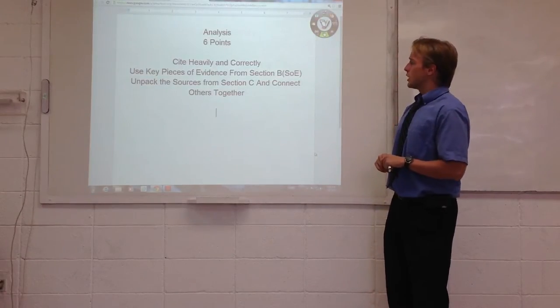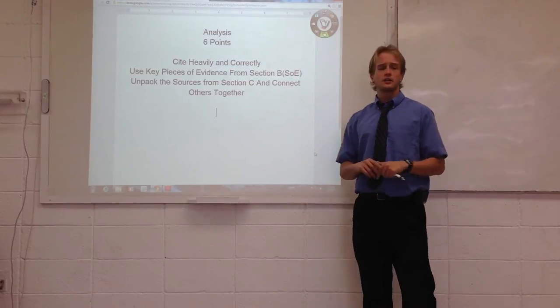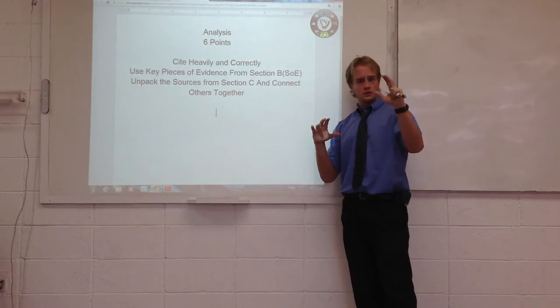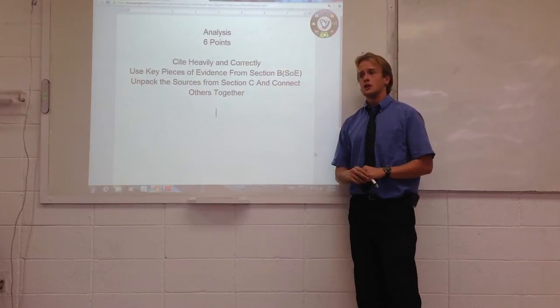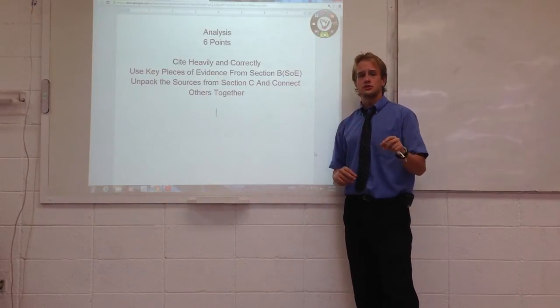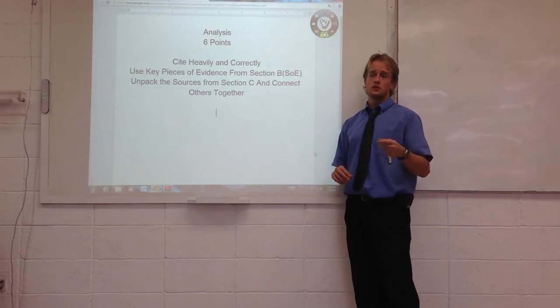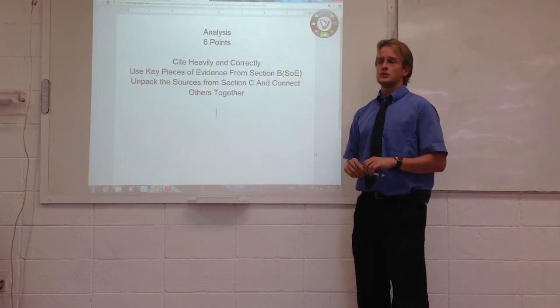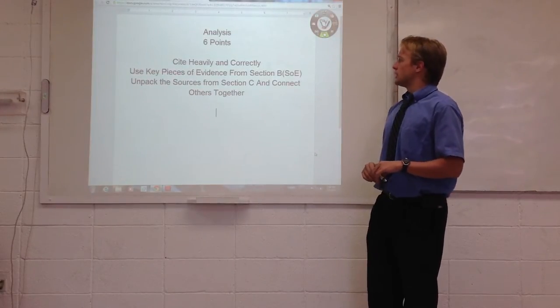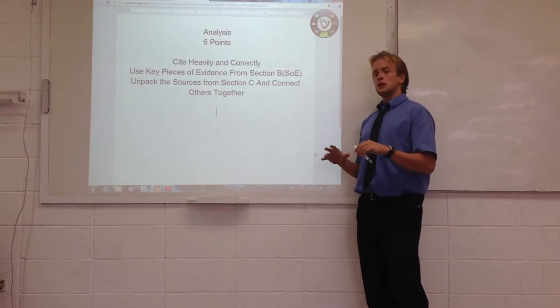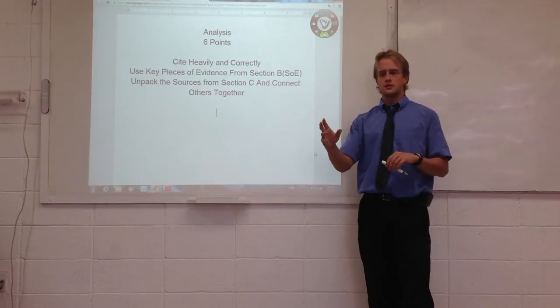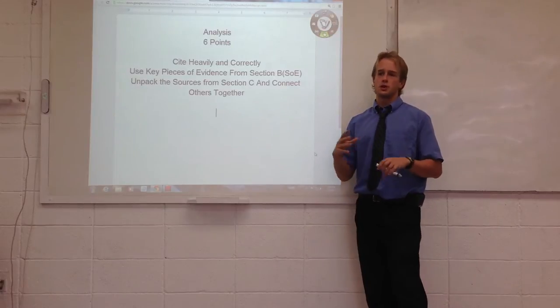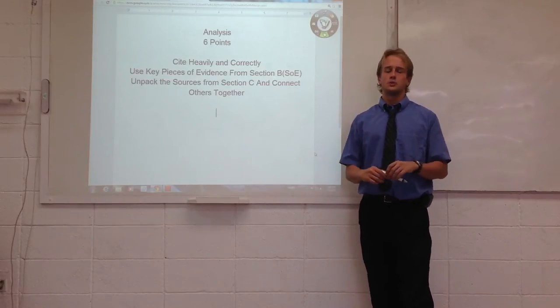The last part, unpack the sources from section C and connect others together. So what that means is that you should, when you're trying to look for the differences or similarities or historical consensus, you should mention the opinions of the historians or the opinions of the authors, the origins of the documents, that you analyze in section C, the evaluation of sources. So this is basically what we're looking for in the analysis. If I had to make it briefer, I would say lots of citations and lots of looking for similarities or differences among the historians or the sources that are being used.